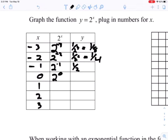2 to the zero equals 1. 2 to the first power equals 2. 2 to the second power equals 4, and 2 to the third power, 2 times 2 times 2, is 8.